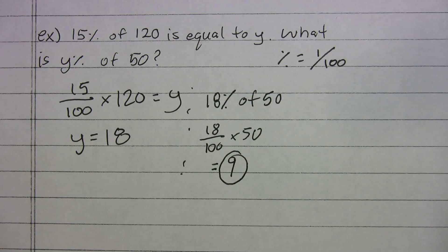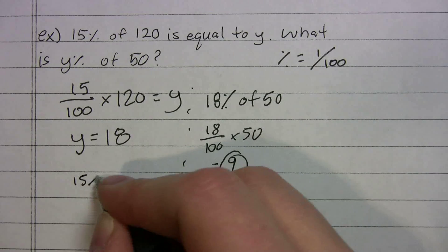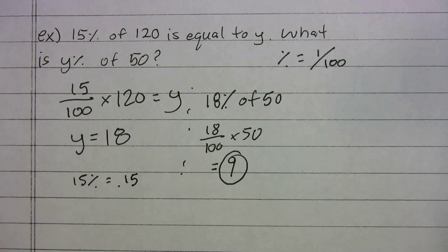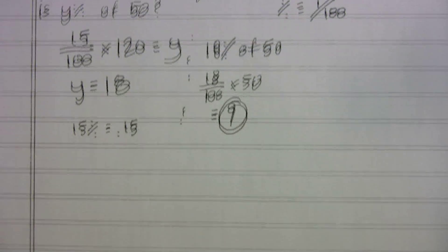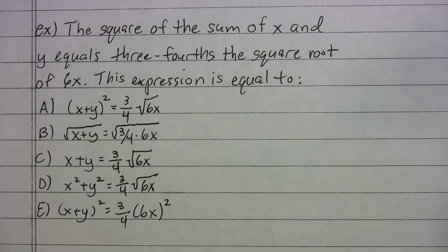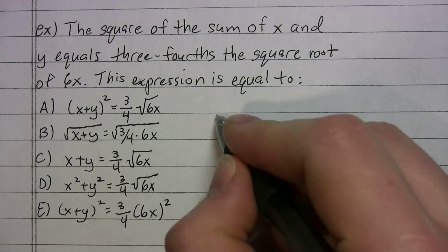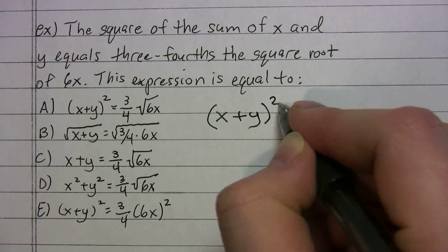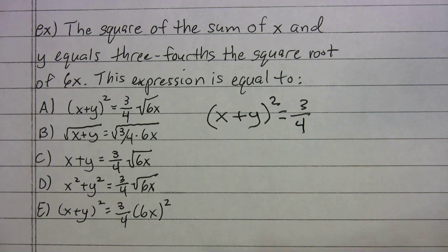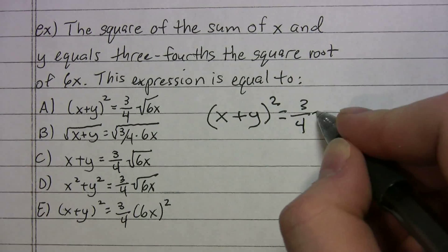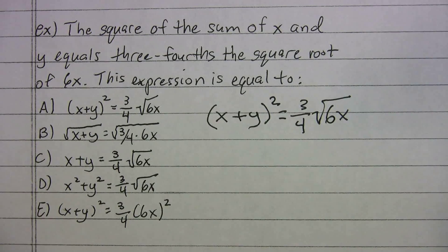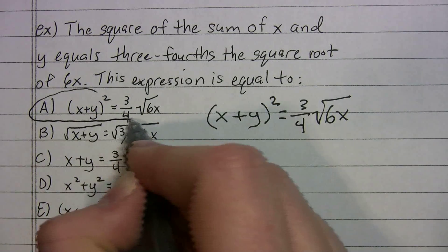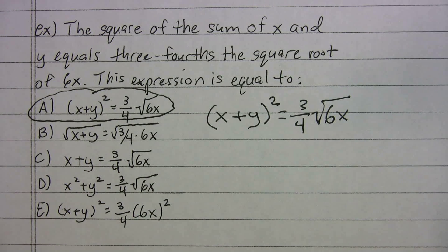You could also enter 15 percent as 0.15 in the calculator — that's another valid approach. The last problem says: 'The square of the sum of x and y equals 3/4 the square root of 6x.' Taking it piece by piece: the sum of x and y is (x + y), the square of that is (x + y)², and that equals (3/4)√(6x). Matching to the answer choices, that's choice A.